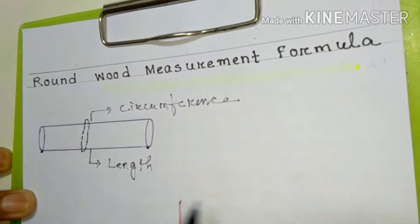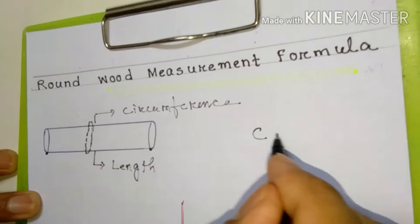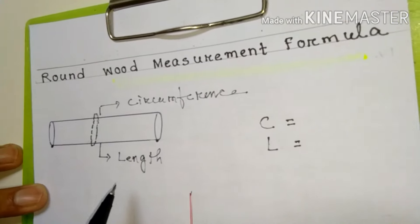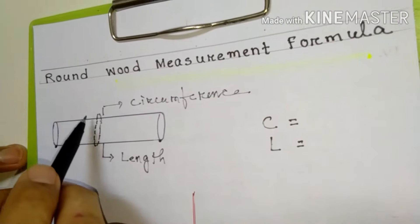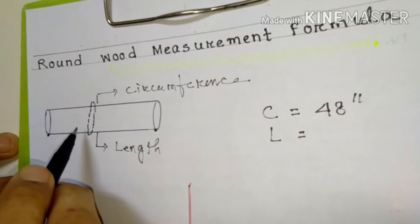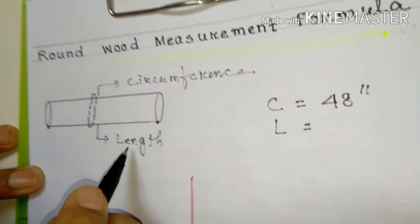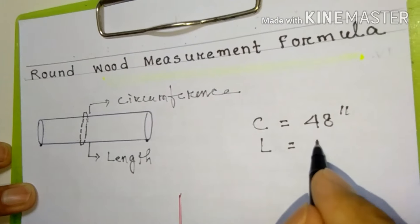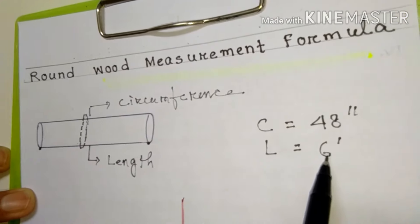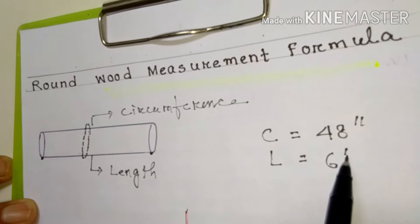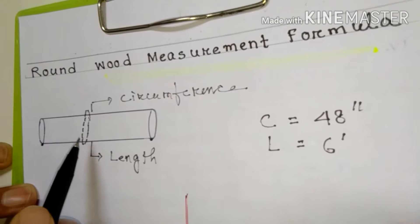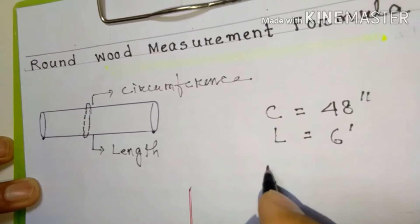This is called a circumference. Let us take this circumference as C short form and length as L short form. Now what we have to do is measure. Suppose we measured and got 48 inches circumference - we measure in inches - and length is 6 feet. We put inches as double quote and feet as single quote.